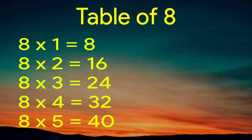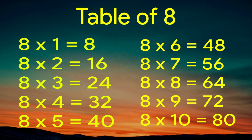Table of 8. 8 times 1 equals 8. 8 times 2 equals 16. 8 times 3 equals 24. 8 times 4 equals 32. 8 times 5 equals 40. 8 times 6 equals 48. 8 times 7 equals 56. 8 times 8 equals 64. 8 times 9 equals 72. 8 times 10 equals 80.